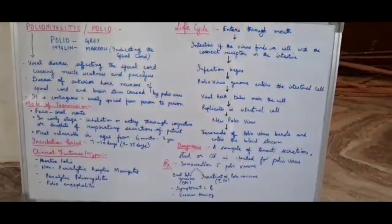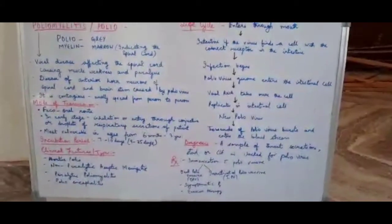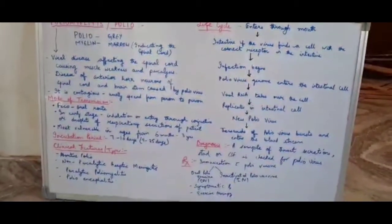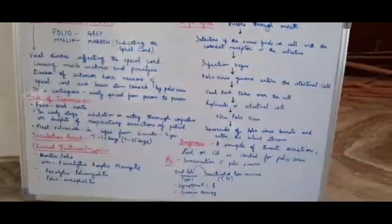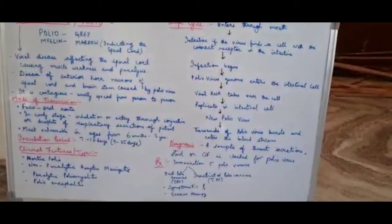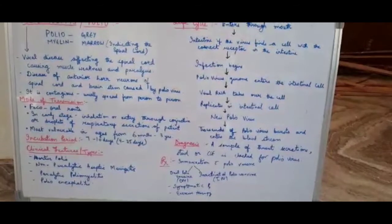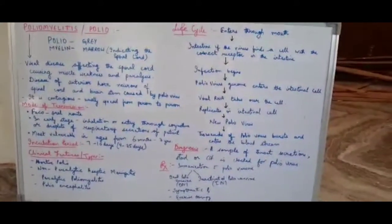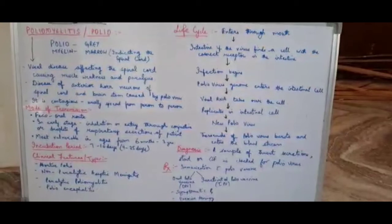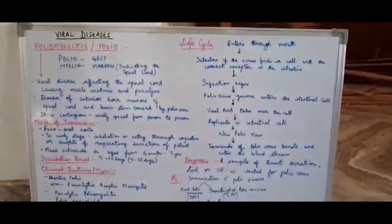It is contagious and spreads from person to person. The mode of transmission is the feco-oral route. Early stages may be by inhalation of droplets of respiratory secretions. It is most commonly found in the elderly and infants. The incubation period is seven to ten days, or you can say four to thirty-five days. Incubation period is the period where the disease signs and symptoms start to appear.